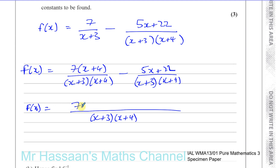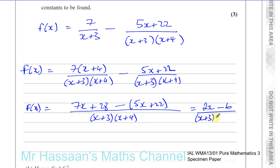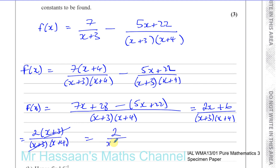The numerator becomes 7x plus 28, then we subtract the bracket 5x plus 22. That minus affects both terms — a common mistake is writing minus 5x plus 22, but it should be minus 5x minus 22. So we get 7x minus 5x which is 2x, and 28 minus 22 which is 6, giving 2x plus 6 over x plus 3 times x plus 4. Taking out the common factor of 2, we have 2 times x plus 3 over x plus 3 times x plus 4. The x plus 3 cancels, leaving 2 over x plus 4.